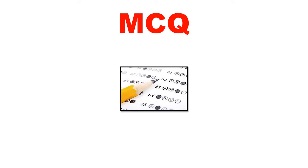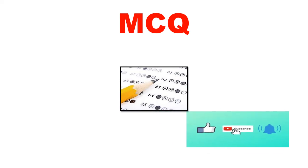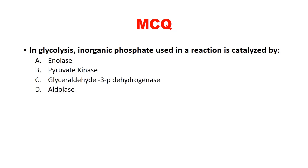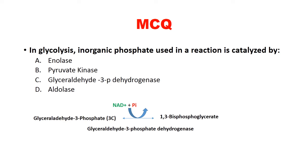MCQs are a high-yield topic from glycolysis, appearing almost every year in NEET-PG or INISET. MCQ 1: In glycolysis, inorganic phosphate is used in a reaction catalyzed by which enzyme? Options: enolase, pyruvate kinase, glyceraldehyde-3-phosphate dehydrogenase, aldolase. The answer is glyceraldehyde-3-phosphate dehydrogenase — it is the only reaction in glycolysis requiring inorganic phosphate to generate a phosphorylated product.